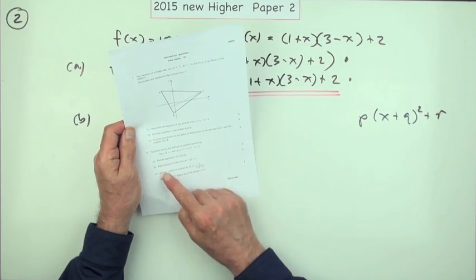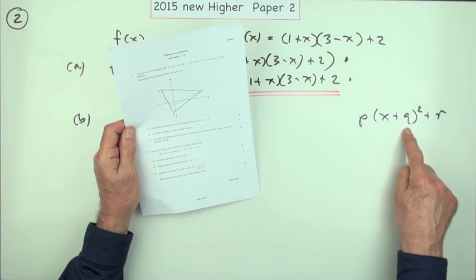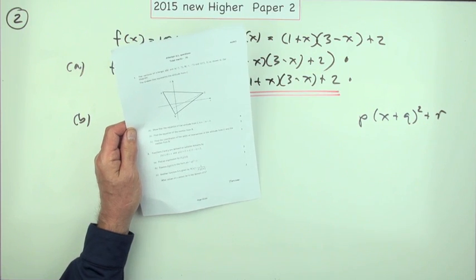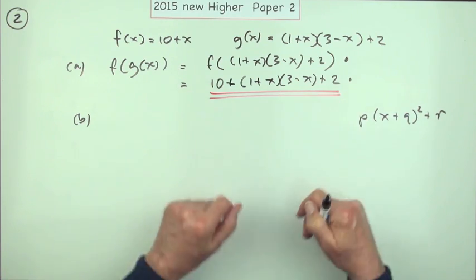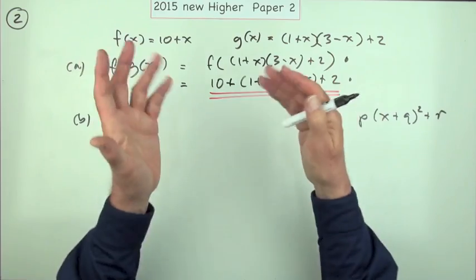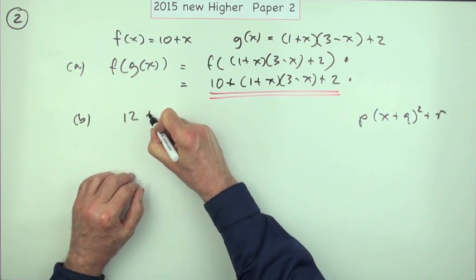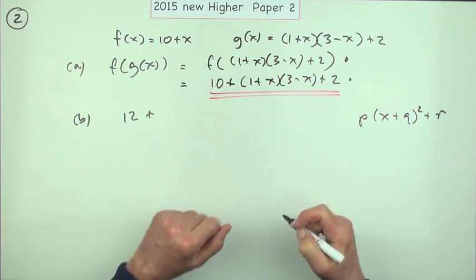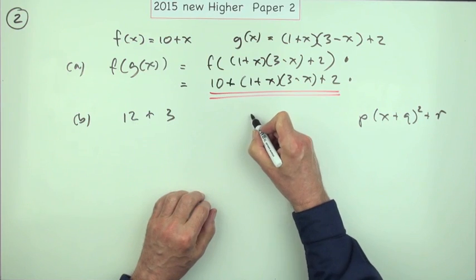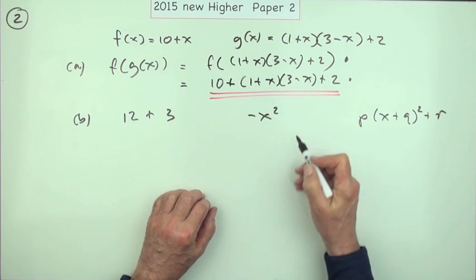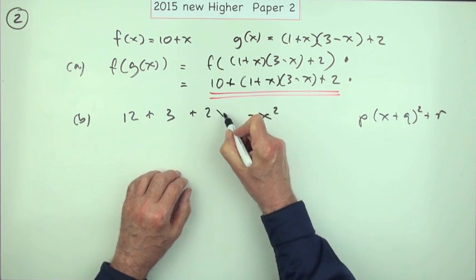So what is part b? Express f of g of x in the form p(x+q)²+r, in other words complete the square, for three marks. Well now that's no use to you, so you'll need to expand it out and gather it up. So what have we got? I think straight away I'll do my 10 plus 2. Multiplying out this bracket, it'll be 3 minus x squared: first times first, last times last, and then we've got a minus x and a plus 3x, which is a plus 2x.